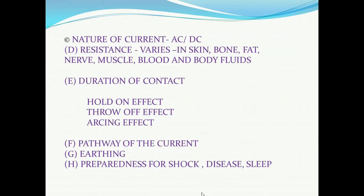The next factor is the pathway of the current, which also determines whether the outcome is going to be fatal or otherwise. For example, if entry is from one upper limb and exit is from the opposite lower limb, then the heart is on the way and this pathway is fatal. If entry is from one foot and exit is from the other foot, this is likely to be less fatal. If earthing is present, the outcome is likely to be fatal.